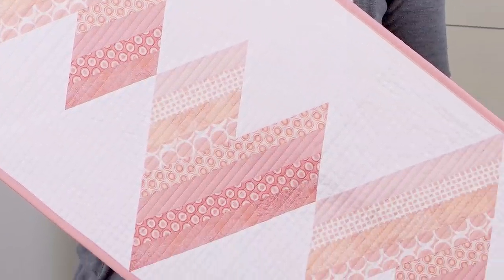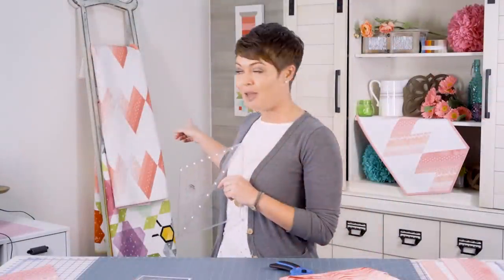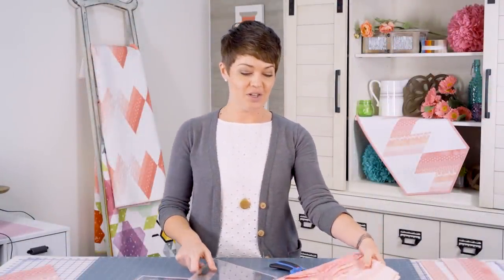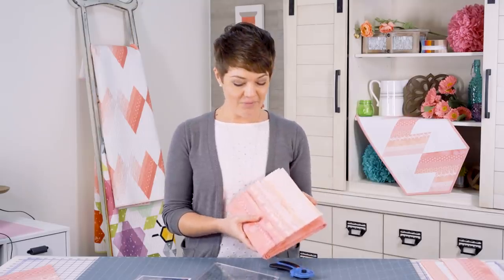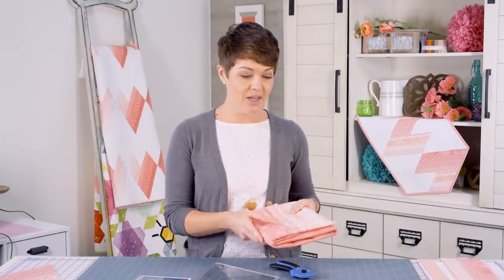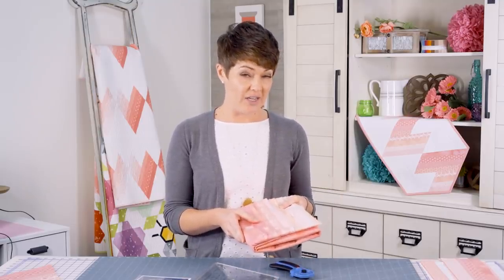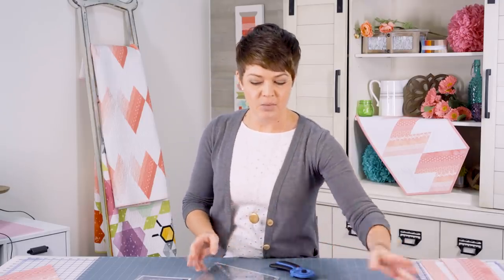It's a table runner, what you see just here, and it's a baby quilt. I've used the Rose Spectrum Bundle that's available at Fat Quarter Shop, and I just chose eight shades, light to dark. So what I'm going to do is show you some of the cuts.